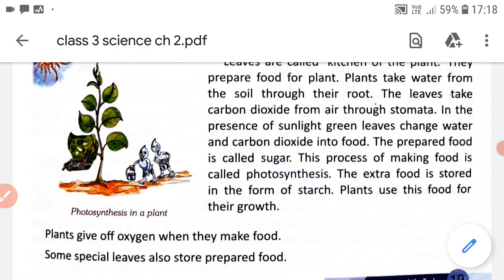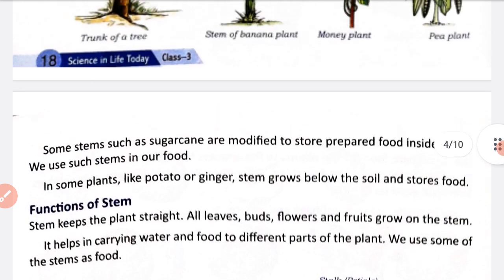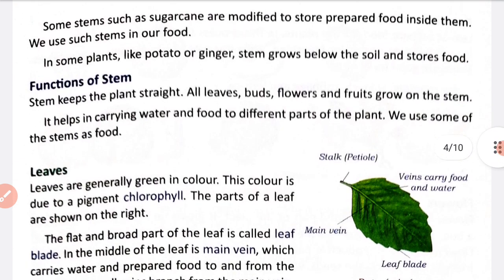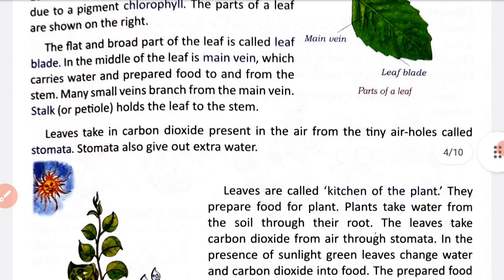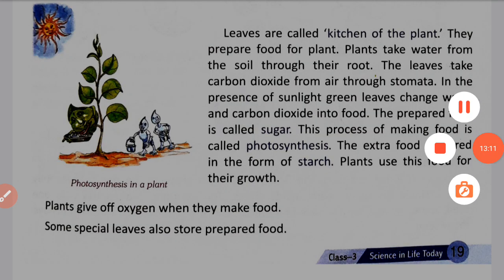The extra food is stored in the form of starch. Plants use this food for their growth. Plants give off oxygen when they make food - jab plant apna food prepare karte hain to yeh oxygen ko chodte hain, jo ki hum intake karte hain. So we learned that plants ke main two parts hote hain: root and shoot. Shoot plant ka main part hai jiske sub-parts hain stem, leaves, buds and flowers. In the next video we will complete this chapter. Stay tuned, take care.